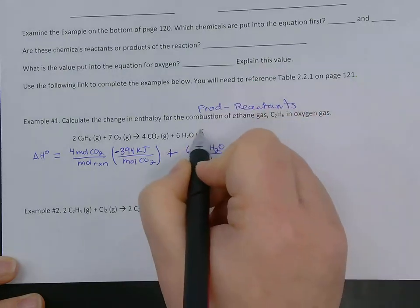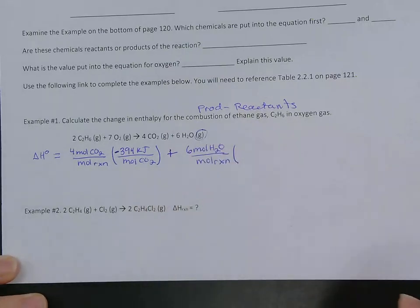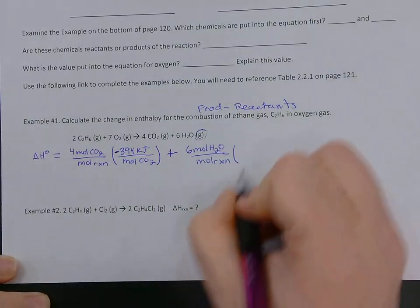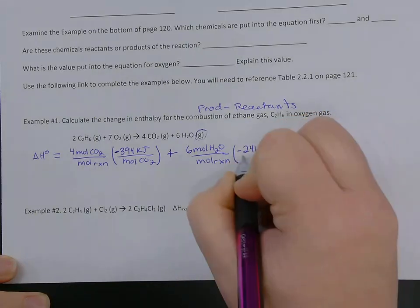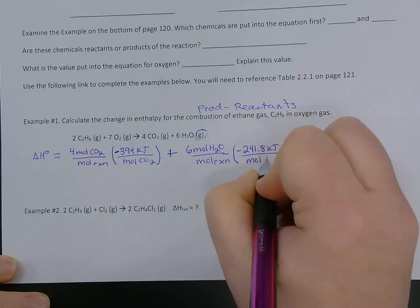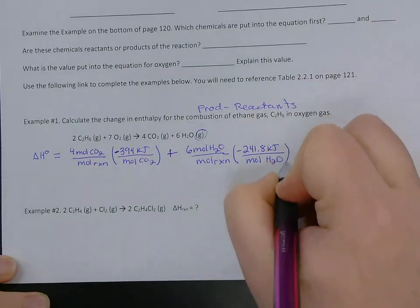Now we do want to be careful with our state of matter. This one is a gas, so we want to use the gas value from the table, which is negative 241.8 kilojoules per mole water.